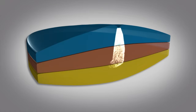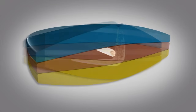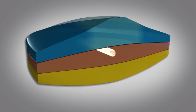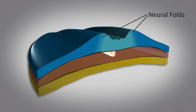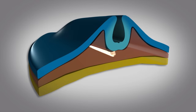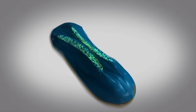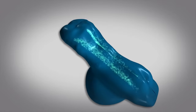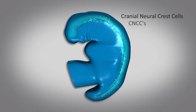In the third to fourth weeks of development, a cord called the notochord is formed. This induces the cells in the overlying ectoderm to thicken, forming a region called the neural plate along the back of the embryo. The edges of the neural plate elevate to form the neural folds that eventually fuse to form the neural tube. During this process, neural crest cells are formed along the entire length of the tube. Neural crest cells formed from the head or cranial region are called cranial neural crest cells, or CNCCs.